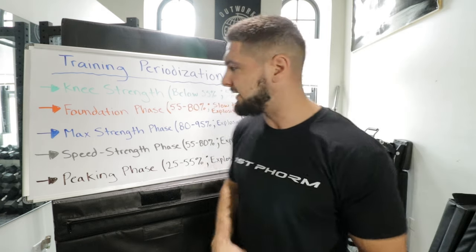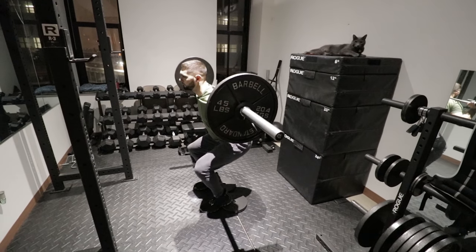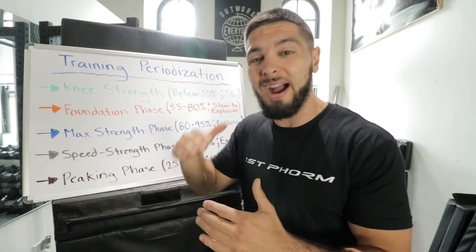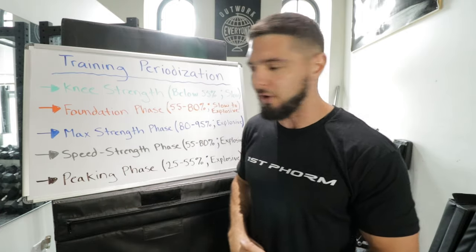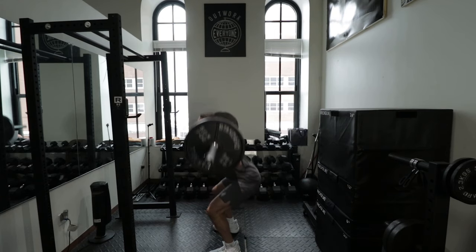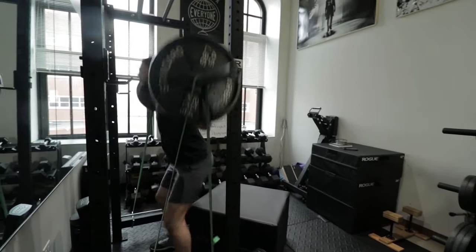In the foundation phase, we do slow to explosive movements. You can't jump straight from slow eccentrics to explosive movements — you have to start slow and gradually progressive overload, getting faster and faster as your tendons adapt. This phase is nine weeks long: three weeks of eccentrics, three weeks of an isometric focus, and three weeks of a concentric focus. The eccentric weeks use slow descents; the isometric weeks involve going down fast and pausing in a joint-angle-specific squat for a five-second hold, then exploding up; and the concentric weeks are down and up as fast as possible.